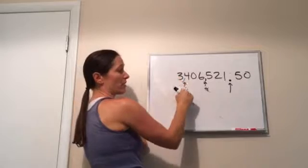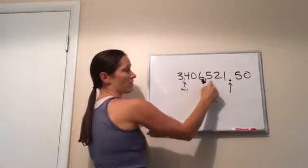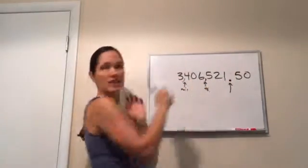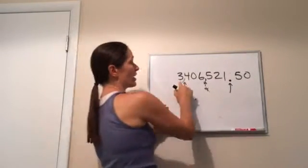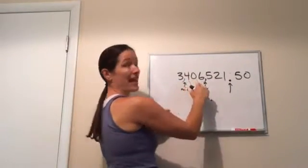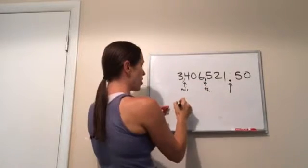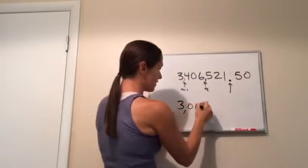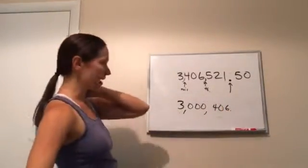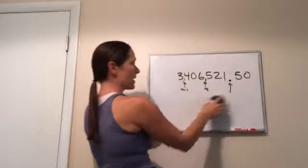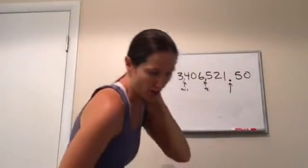So this would be three million, four hundred and six thousand and five hundred and twenty-one and fifty cents. See how I said that? But if I said three million, four hundred and six, it would be almost three million and then four hundred six and. So it would just make it really off. So you make sure you don't say and except when there's a decimal.